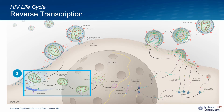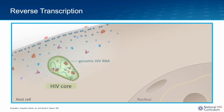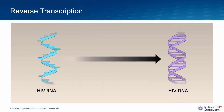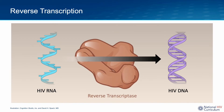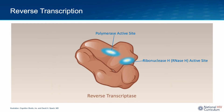Now let's look at HIV reverse transcription, which is occurring during the transport of the HIV core to the nucleus. Reverse transcription is the step involving the conversion of HIV RNA into HIV DNA, and it begins inside the HIV core soon after it enters the host cell. The enzyme that catalyzes this process is reverse transcriptase, which has two key enzymatic regions: the polymerase region, which facilitates building out the new DNA strand, and ribonuclease H, which degrades unwanted intermediate RNA and DNA segments during reverse transcription.